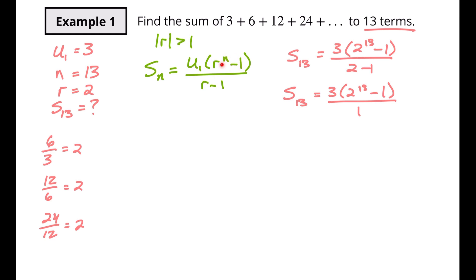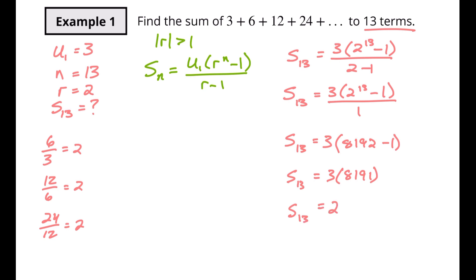In the geometric sequence the minus 1 is up in the power, but in the series it's just subtracting 1. So s of 13 equals 3 times 2 to the 13th, which is 8,192, minus 1. Then 3 times 8,191 is equal to 24,573. You can check that with your calculator. So there's our first example of how to use a geometric series formula. I've got two more for you.